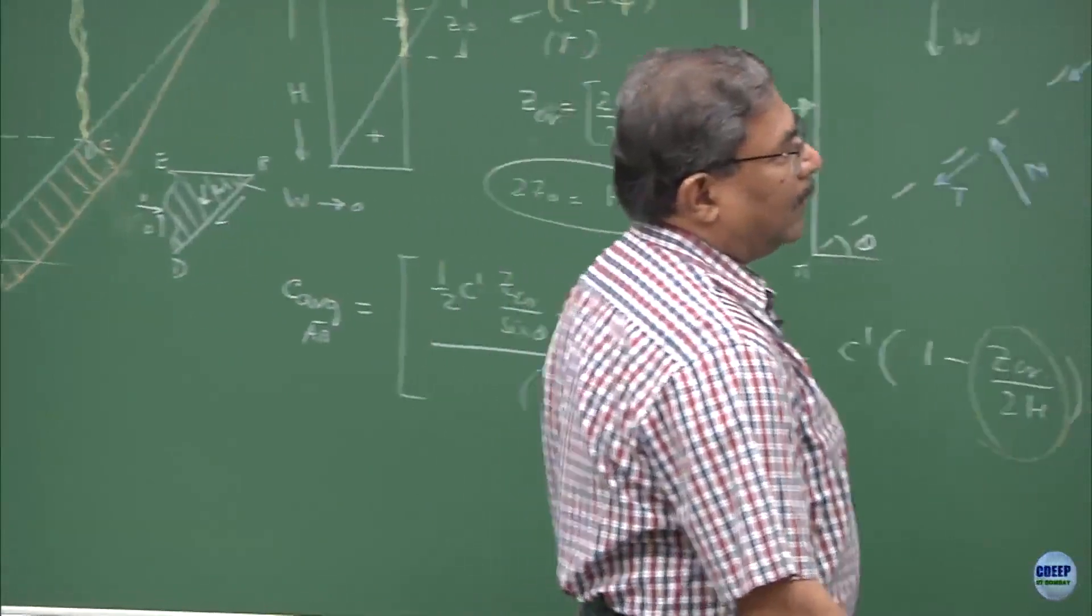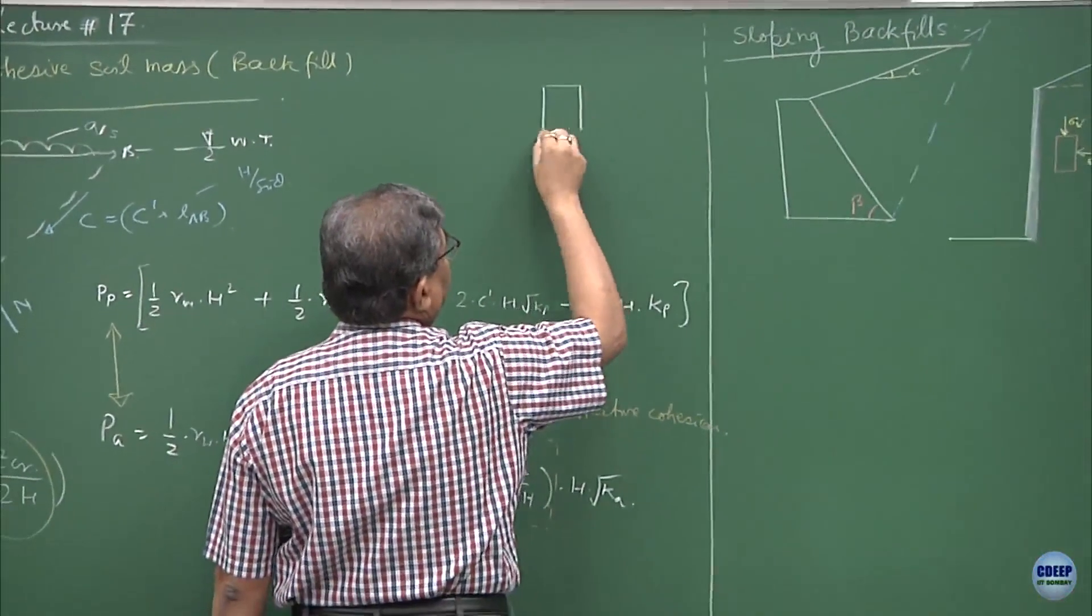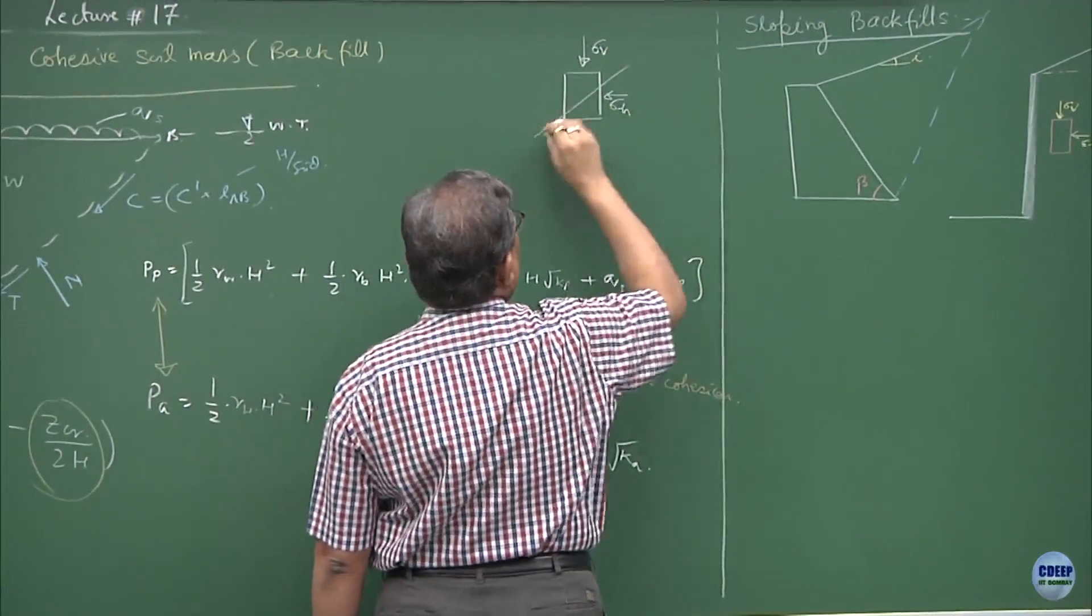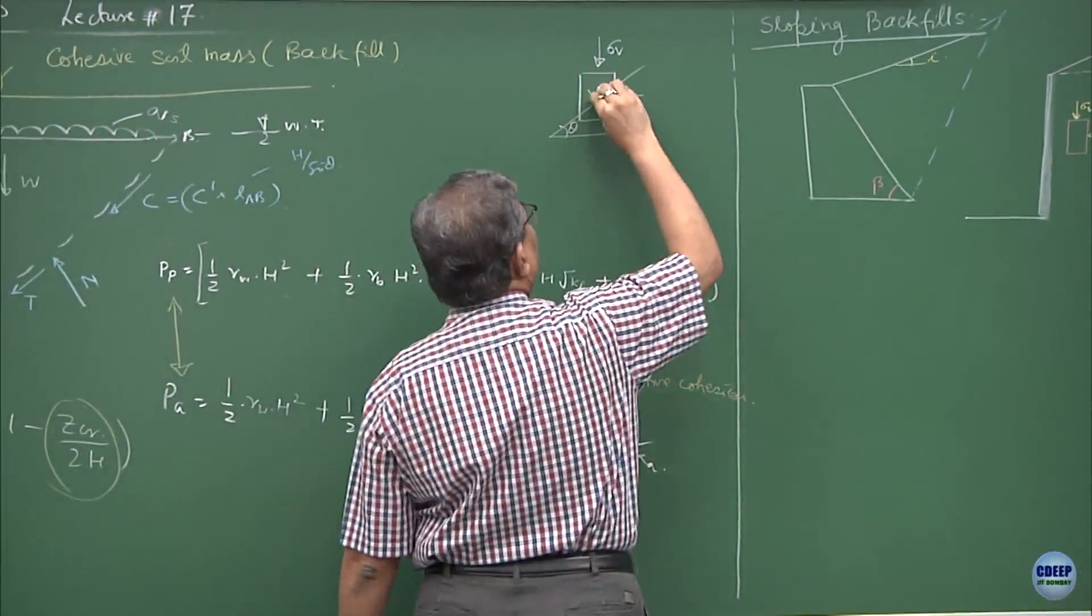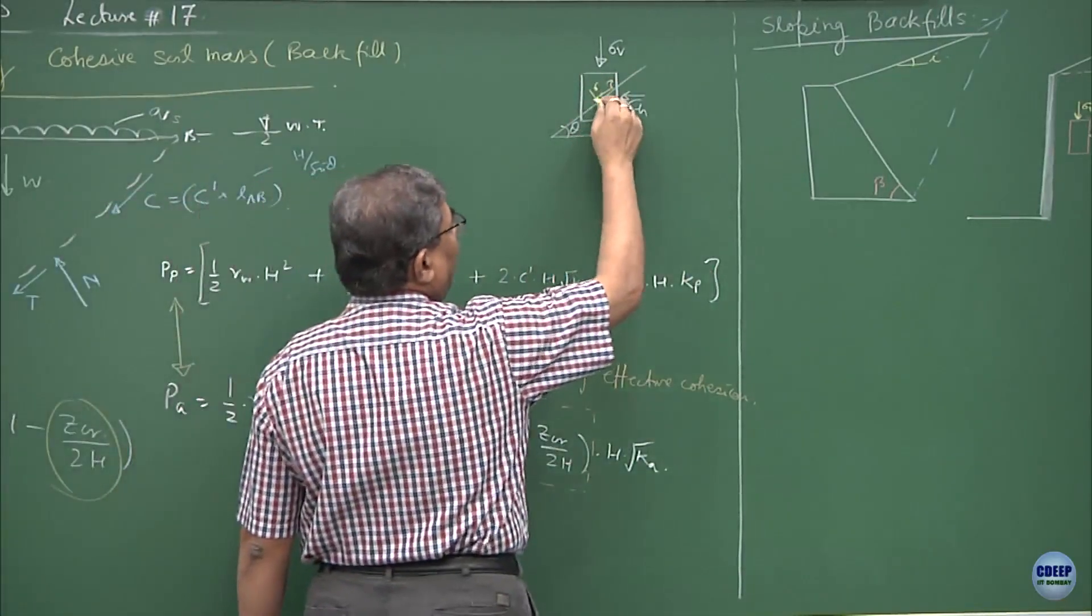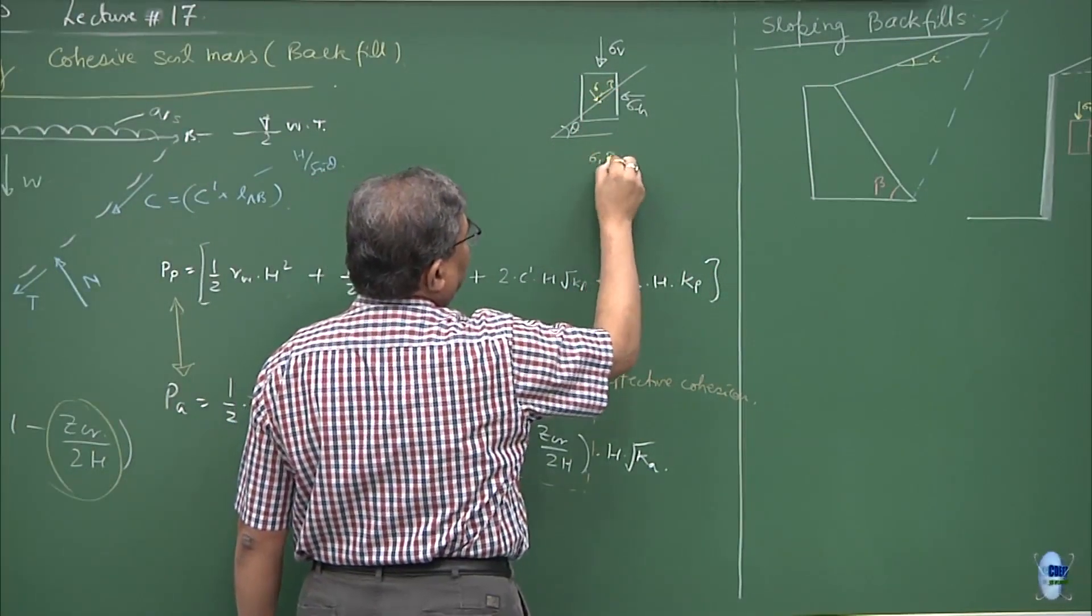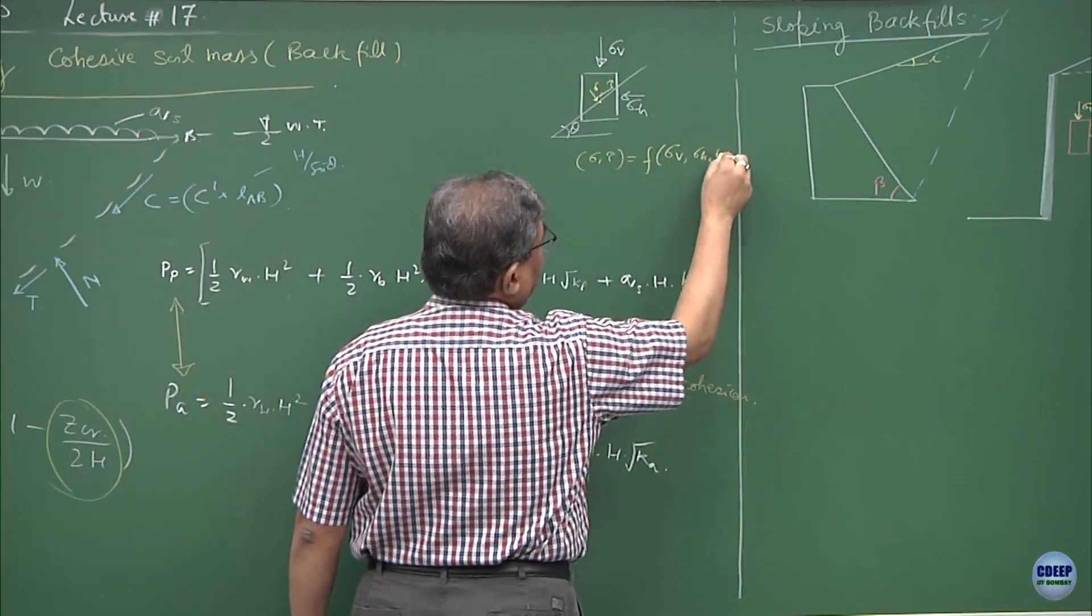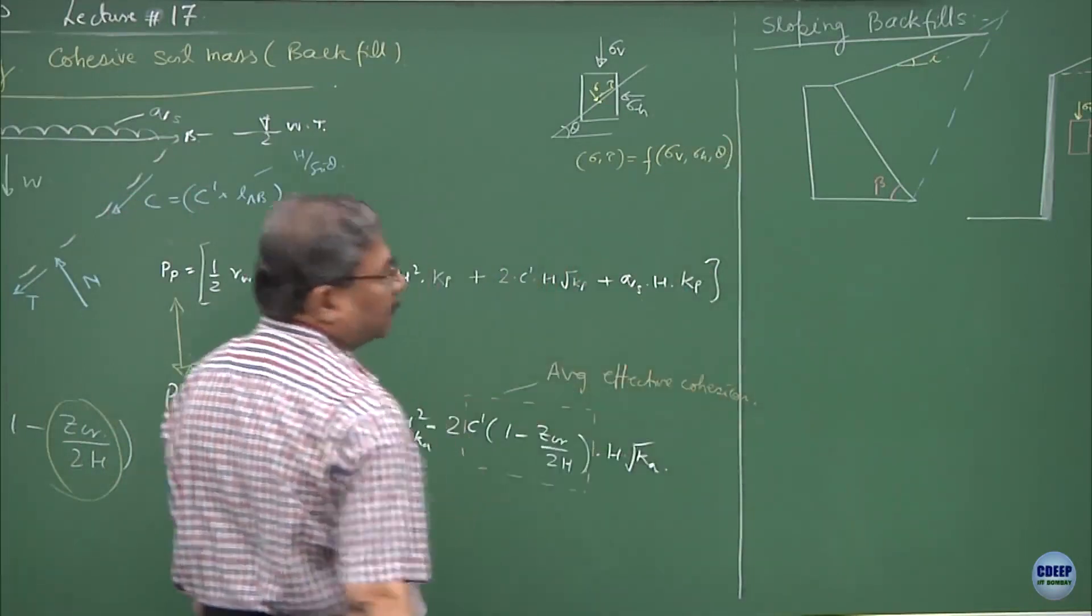You remember, we did several cases for finding out the Mohr circle. If this is the element of the soil, sigma_v is known, sigma_h is known, this is the inclination plane theta and then you were supposed to find out the state of stress here at a point O which is passing through a plane inclined at an angle of theta. So you are supposed to find out sigma, tau as a function of sigma_v, sigma_h, theta.